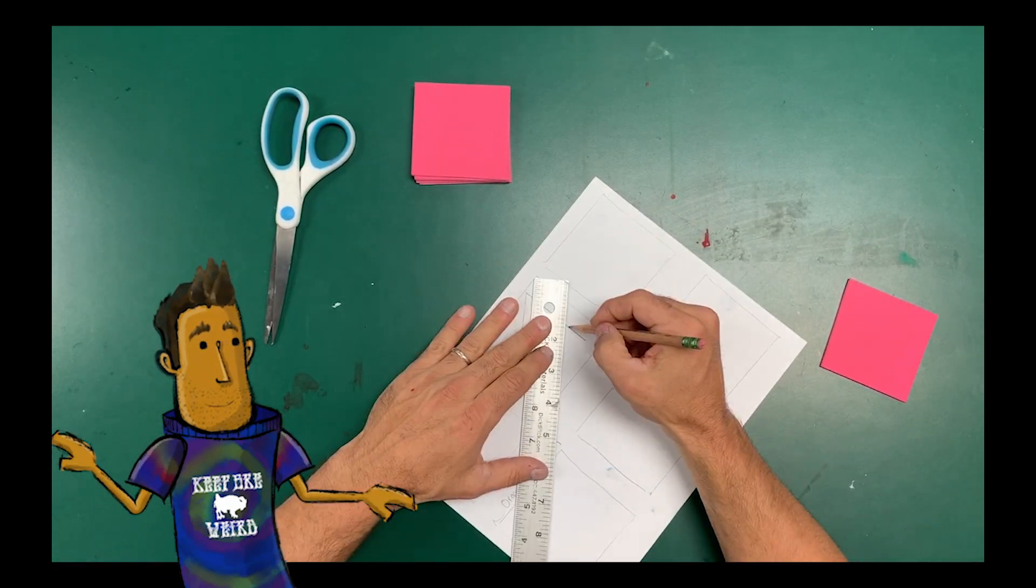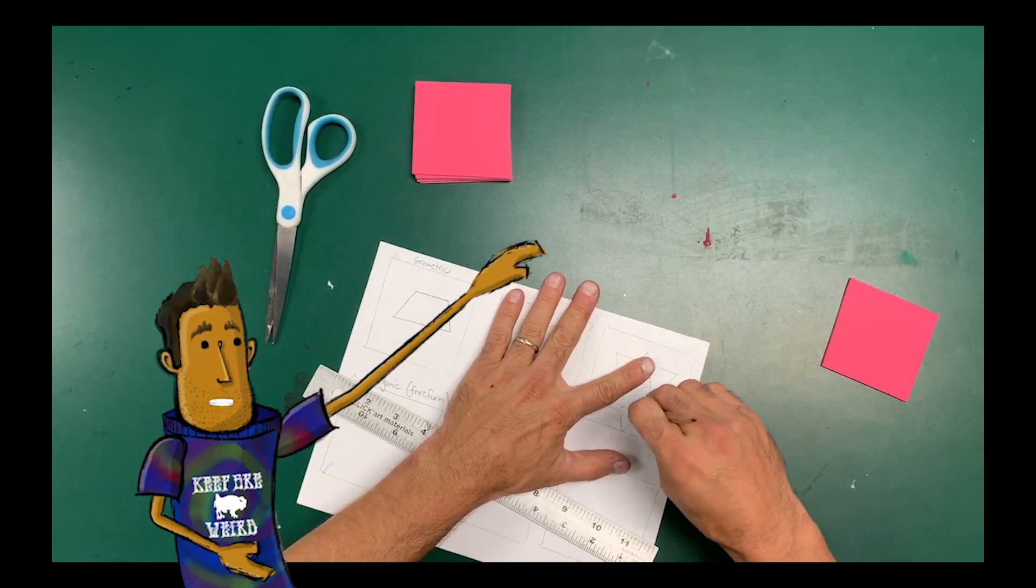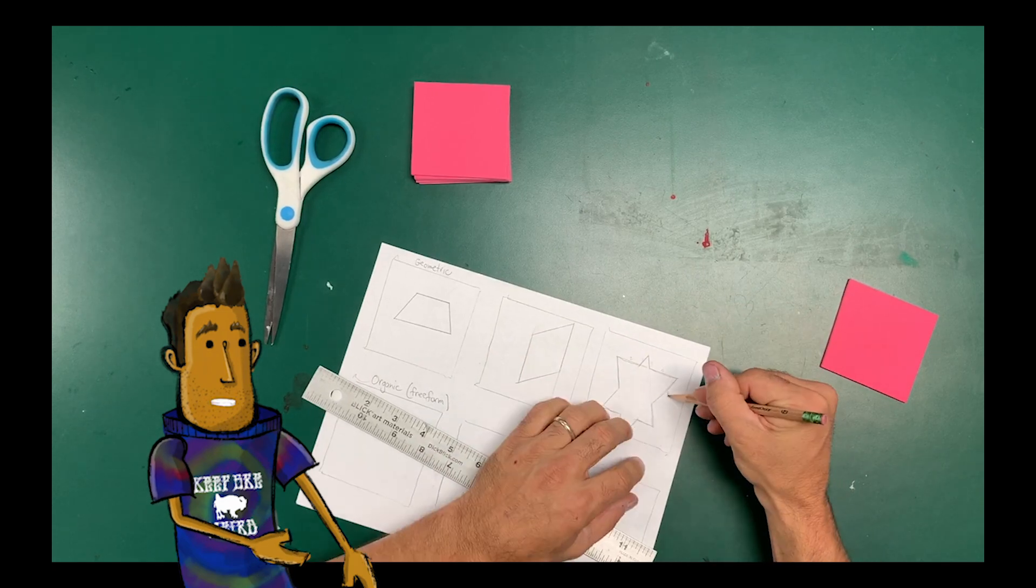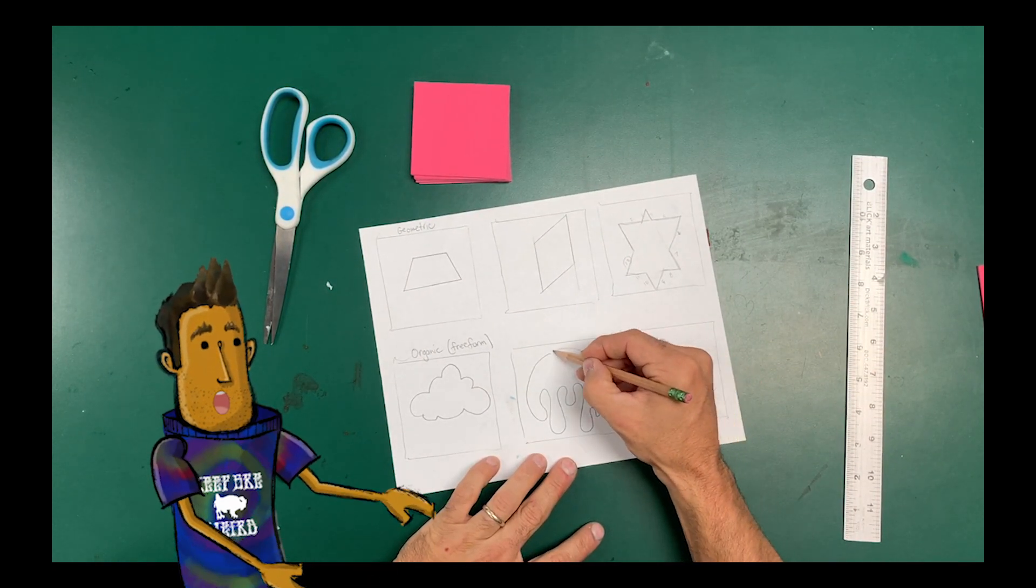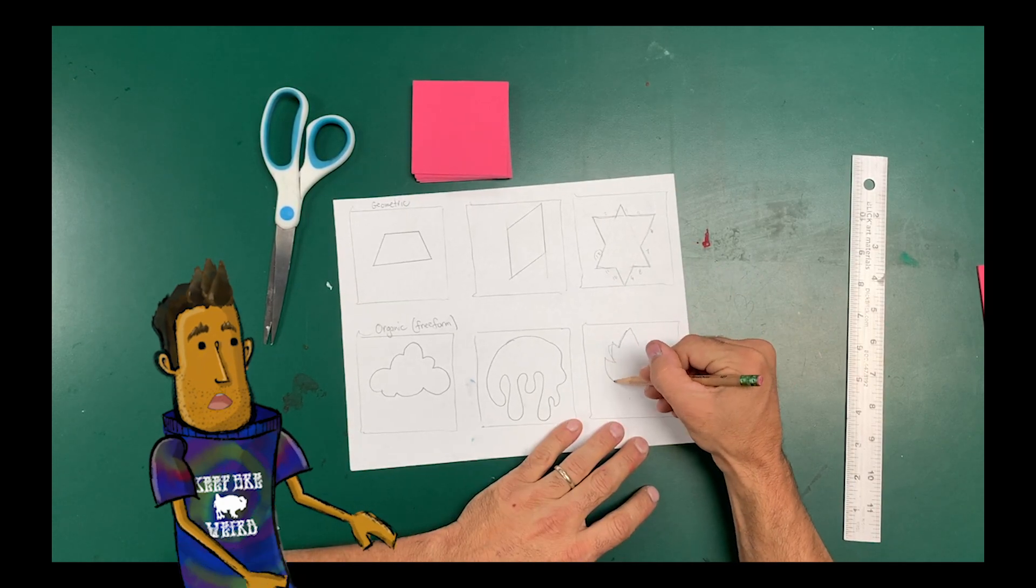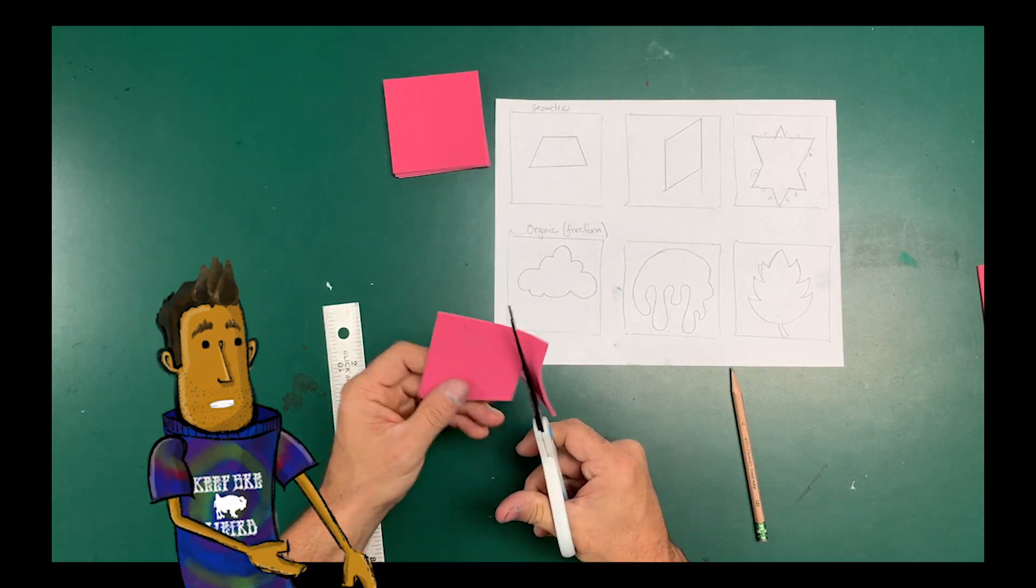I start with a trapezoid, a simple trapezoid, and then I draw a parallelogram. Then I took two overlapping triangles and crossed them over and made a star. For free-form or organic shapes, I did a cloud and a little slime drip thing, and then it looks like a leaf.